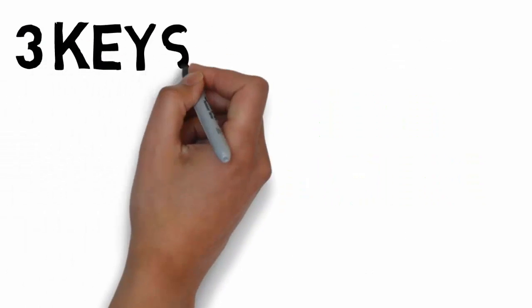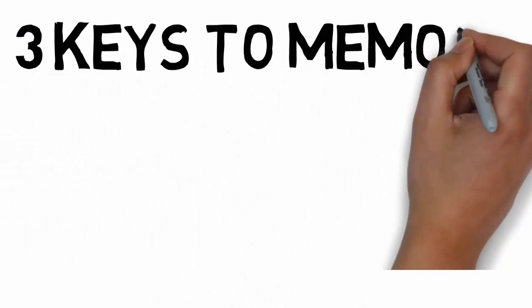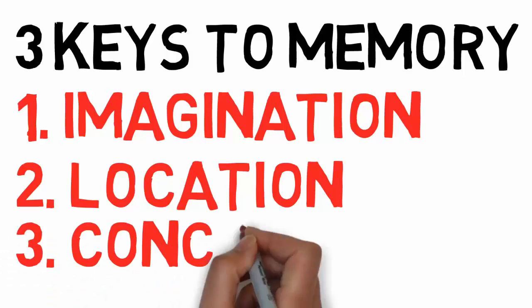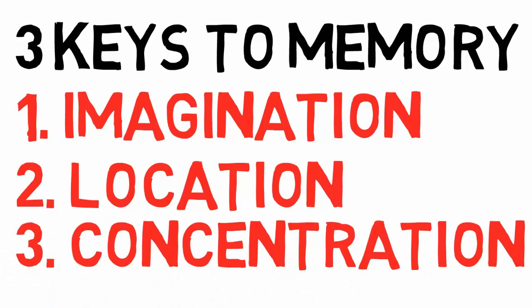Of course we're going to be using the three keys to memory: imagination, location, and concentration. With imagination, you're going to be changing the information into images, then creating a story out of those images. After you have the story, you're going to place it into a location so you know exactly where that information is, because the location acts like a folder on a computer.